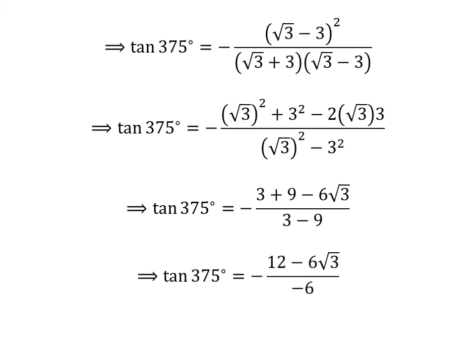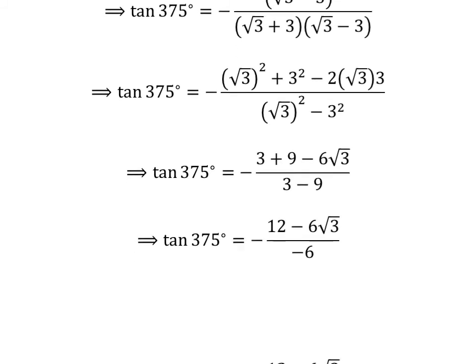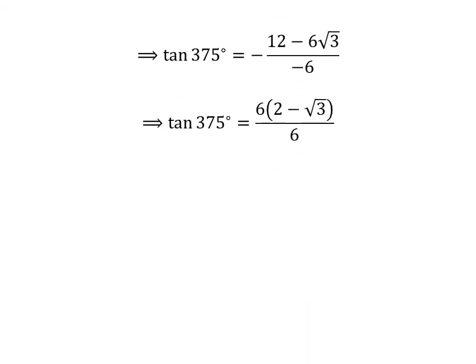Further simplification gives us tangent of 375 degrees is equal to minus 12 minus 6 times square root of 3, upon minus 6. Cancelling out the minus signs and taking out the common factor of 6 in the numerator and denominator gives us tangent of 375 degrees is equal to 2 minus square root of 3.